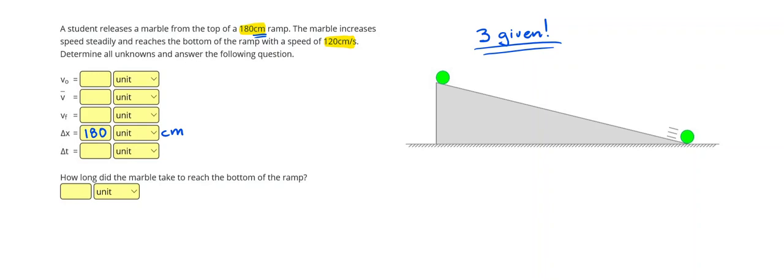Then it says the marble reaches the bottom of the ramp with a speed of 120 centimeters per second. The centimeters per second implies that it's a velocity. Since it says the bottom of the ramp, that's going to be my final velocity.